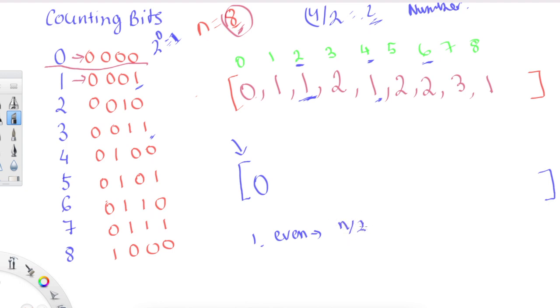If it's even, we take the number over the half and we put whatever number of ones is in that position. So that is our answer.